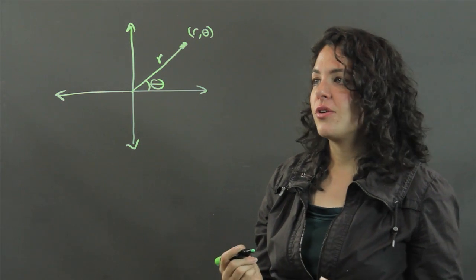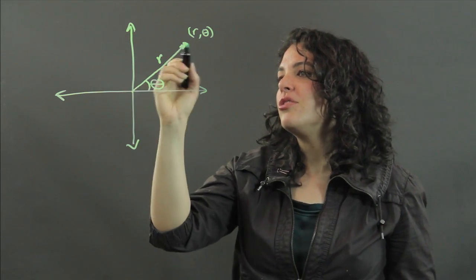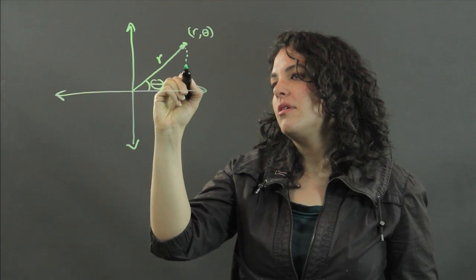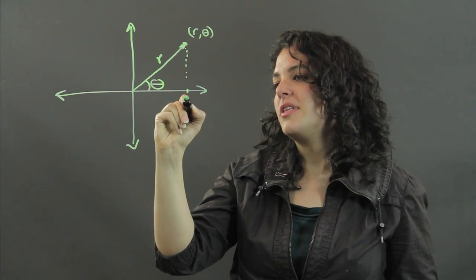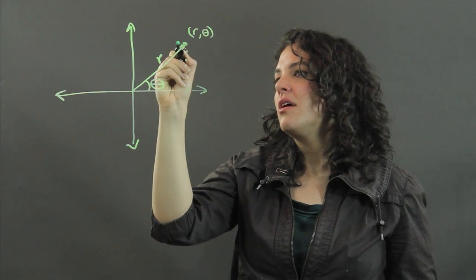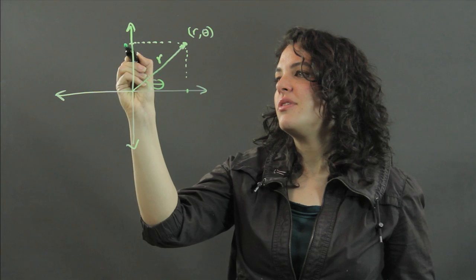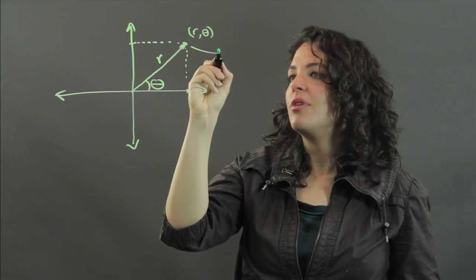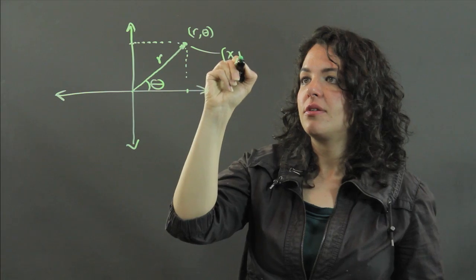Now, in rectangular coordinates, we would usually look at what the x value is here, and then we'd look at what the y value is here, and we'd call it x, y.